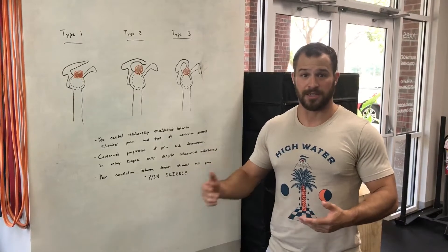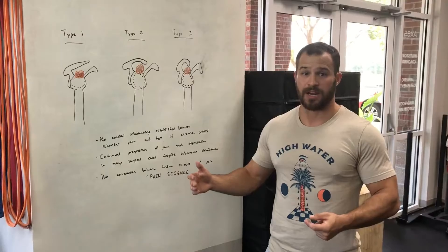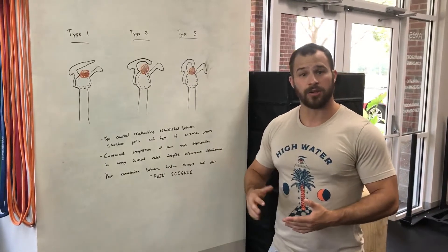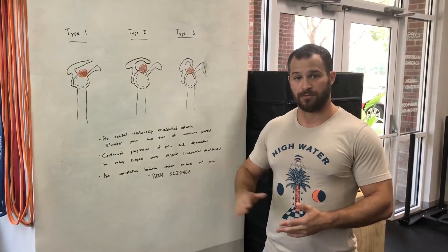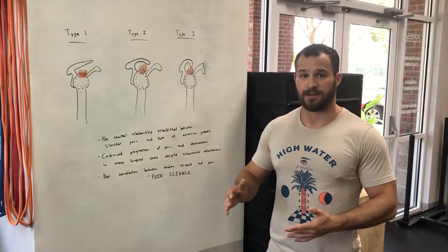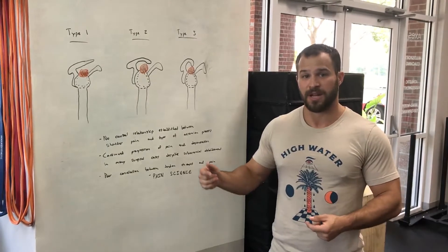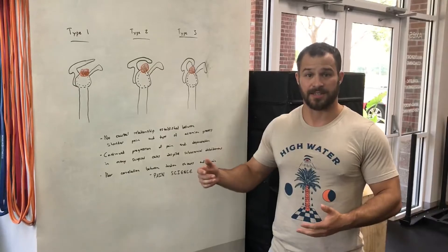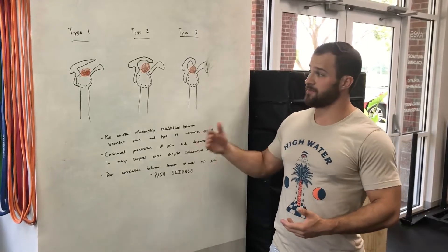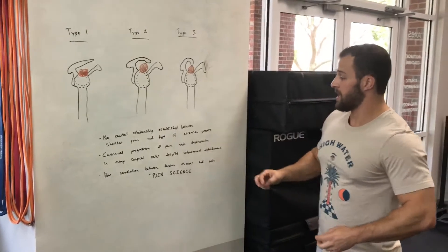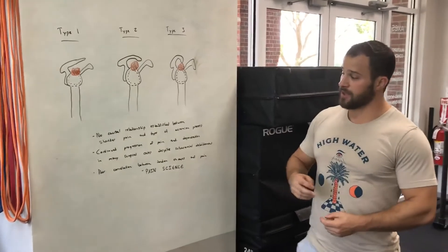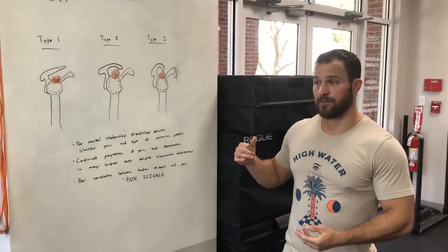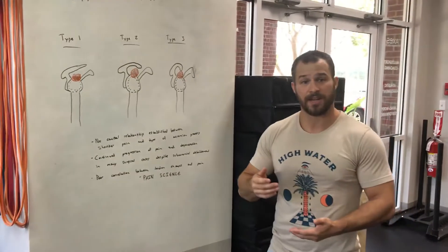Whether it's Achilles tendinopathy, patellar tendinopathy, or others — if you look at the rotator cuff tendons of people with these impingement syndromes, they look just like tendons with tendinopathy elsewhere in the body: the same chemicals present, the same failure to heal, the same failure to adapt to the load going through them.